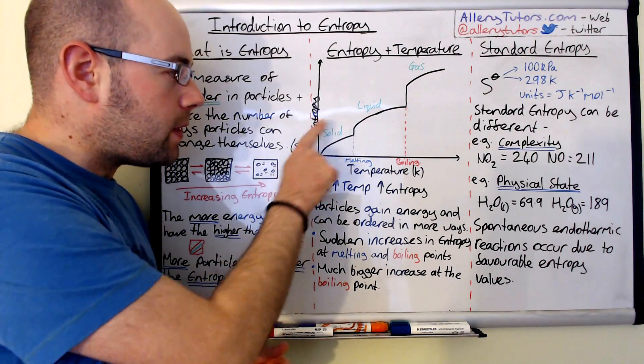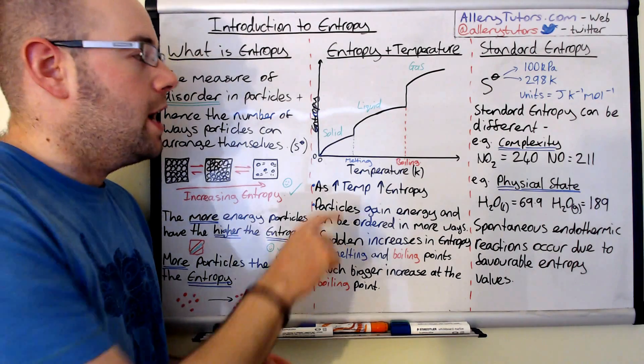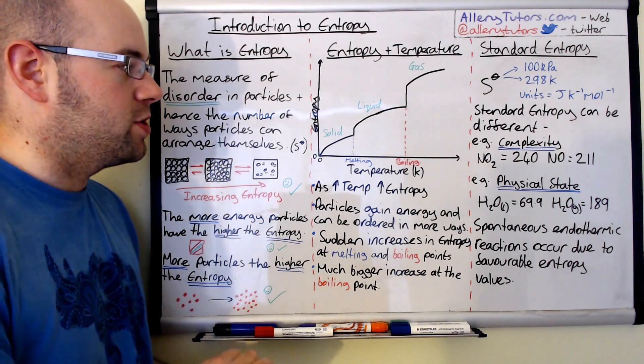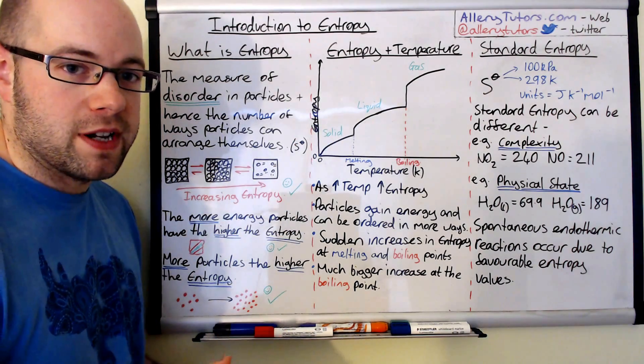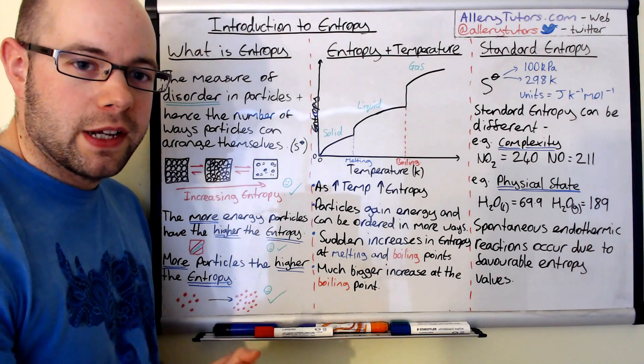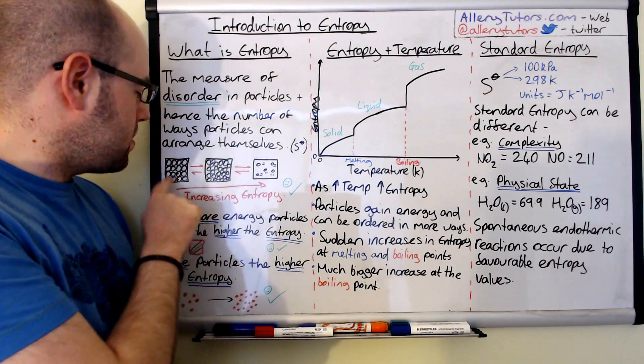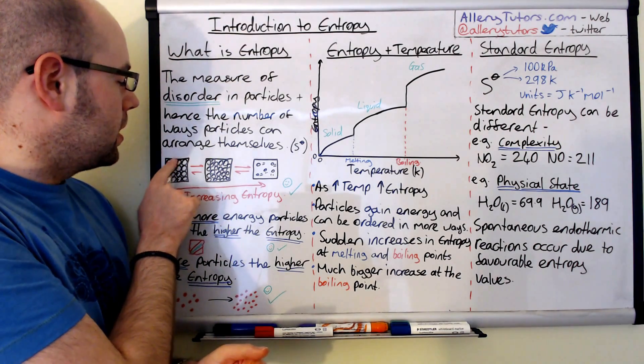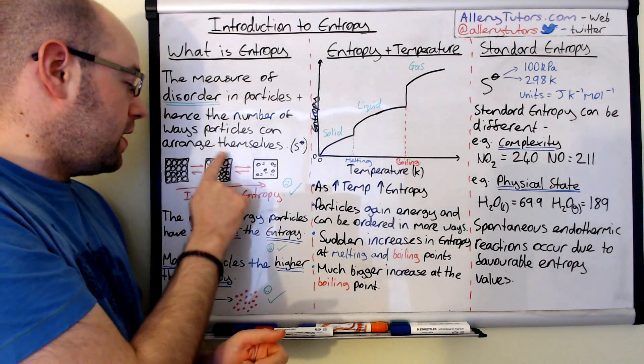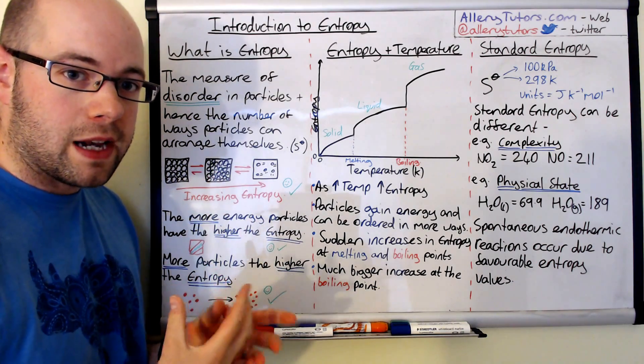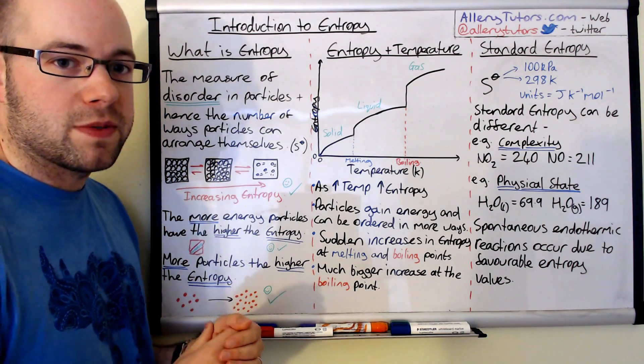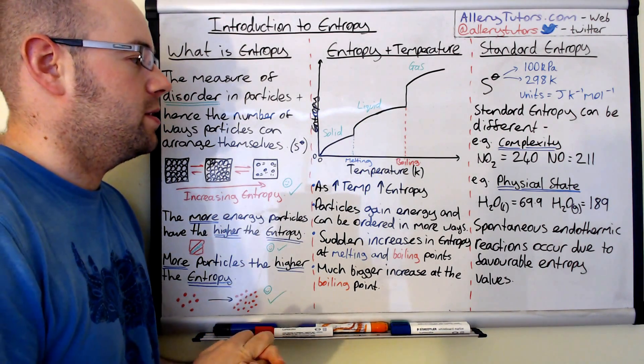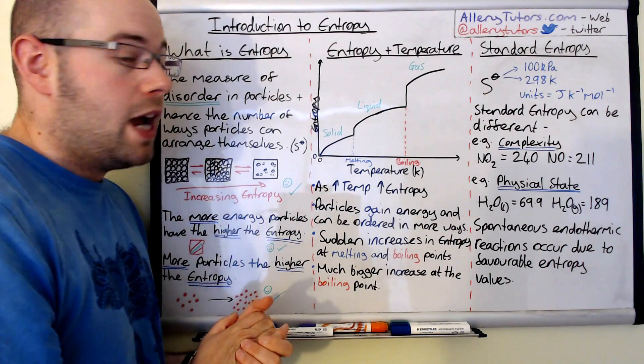As we increase the temperature, obviously at this stage it's a solid and the particles start to gain more energy. This is the energy bit here to do with temperature. Entropy starts to increase until we get to a stage where we get the melting point. At this stage the solid particles start to move significantly more. Instead of them just vibrating a little bit more, at the melting point the particles start to break away that little bit more and there's more ways in which they can arrange themselves. That's why we have a significant increase in entropy at the melting point.